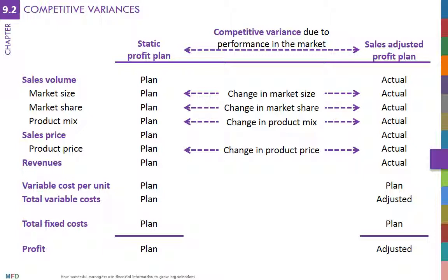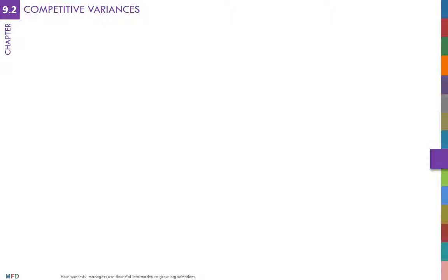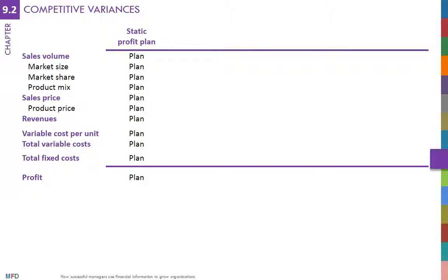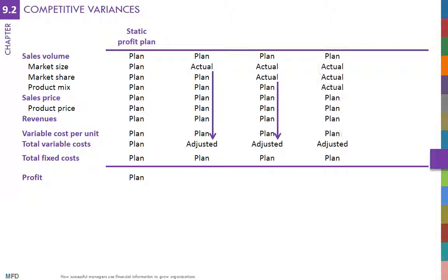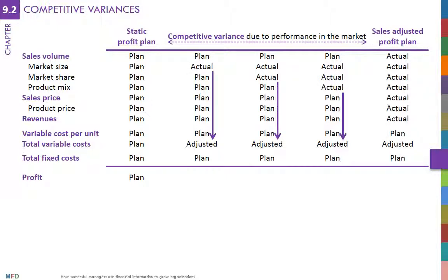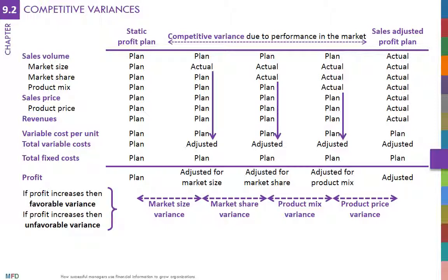If the company does not have information about certain factors, the effect of those factors on profit cannot be estimated. If there is information on these factors, the process of estimating the impact on profit of each is simple, but must be done carefully. Starting at the original profit plan and one by one, each variable that makes up sales must be changed from planned to actual numbers. Each time one of these factors is adjusted, the profit plan is redone, and the change in profits reflects that factor's impact on profits.